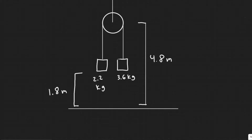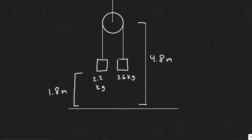In this problem, we're told the two masses shown in this figure are each initially 1.8 meters above the ground, and the massless frictionless pulley is 4.8 meters above the ground. What maximum height does the lighter object reach after the system is released? First, determine the acceleration of the lighter mass and then its velocity at the moment the heavier one hits the ground — this is its launch speed. Assume the mass doesn't hit the pulley and ignore the mass of the cord.